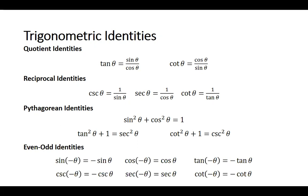And then our odd-even identities: the sine of negative theta is equal to negative sine of theta. These are based on whether the function is odd or even. Sine is an odd function, so if you take the sine of a negative angle, that's equal to the negative of the sine of the positive angle. Cosine is an even function, so the cosine of a negative angle equals cosine of the positive angle. Tangent is an odd function, so tangent of negative theta is equal to negative tangent of theta.